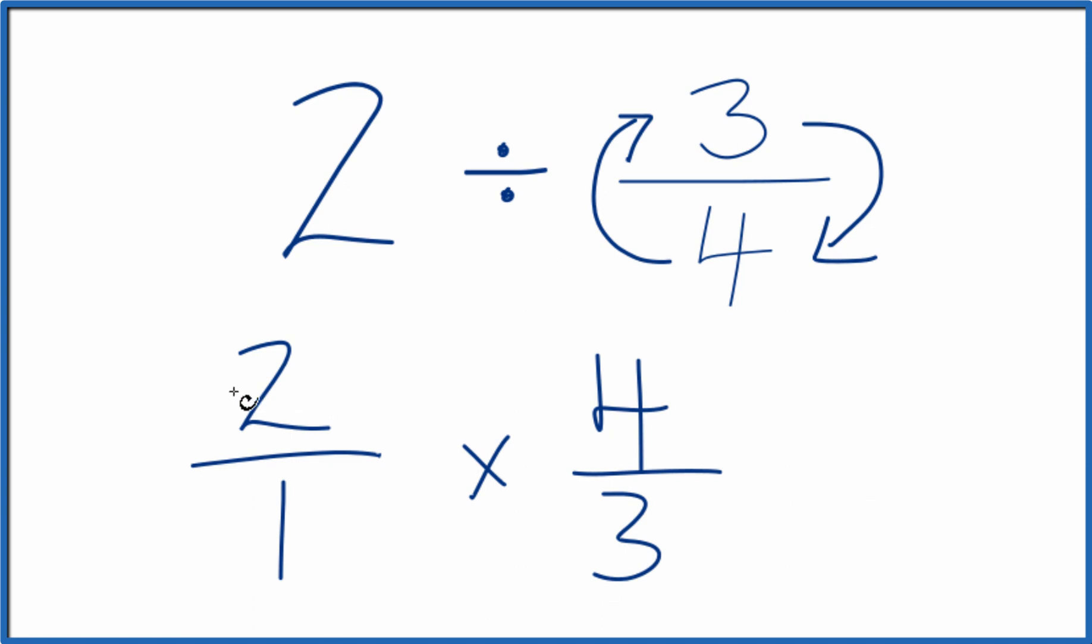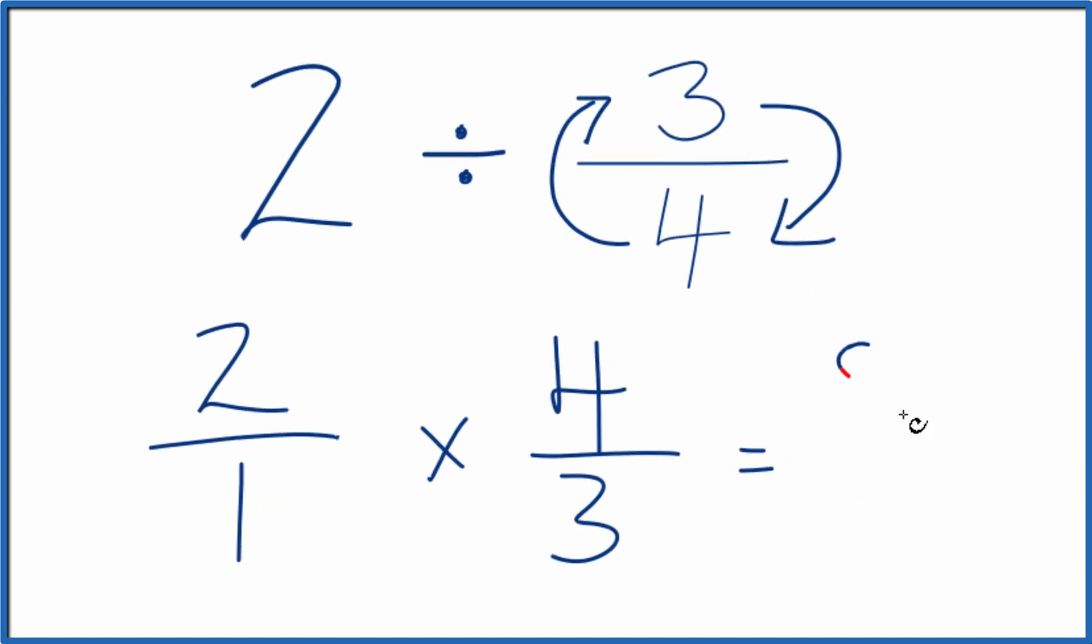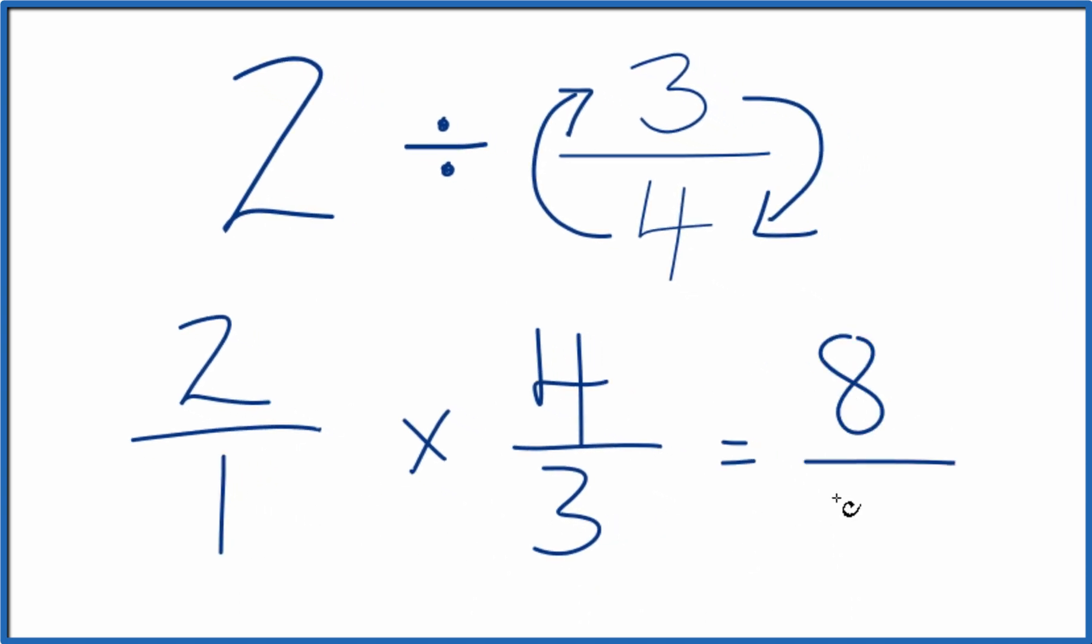When we have fractions, we can just multiply the numerators and then multiply the denominators. 2 times 4, that equals 8. 1 times 3, that equals 3. So 2 divided by 3 fourths, that's 8 over 3, 8 thirds.